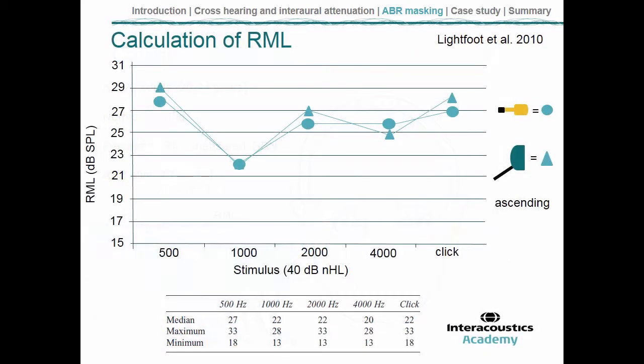Here's what they found: for the tone pip stimuli and the click, the RML was broadly similar between the two different types of headphone, with some slight differences according to stimulus type. The mean values show somewhere between 20 and 30 dB SPL, and the masker is calibrated in SPL because it's a wideband masker.